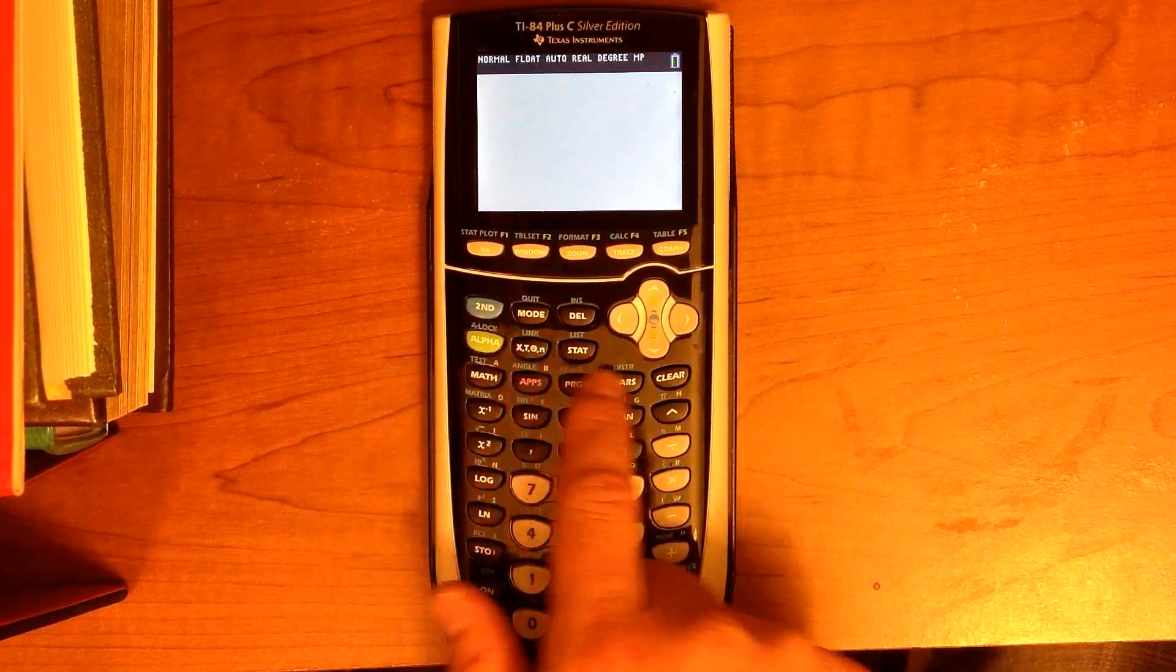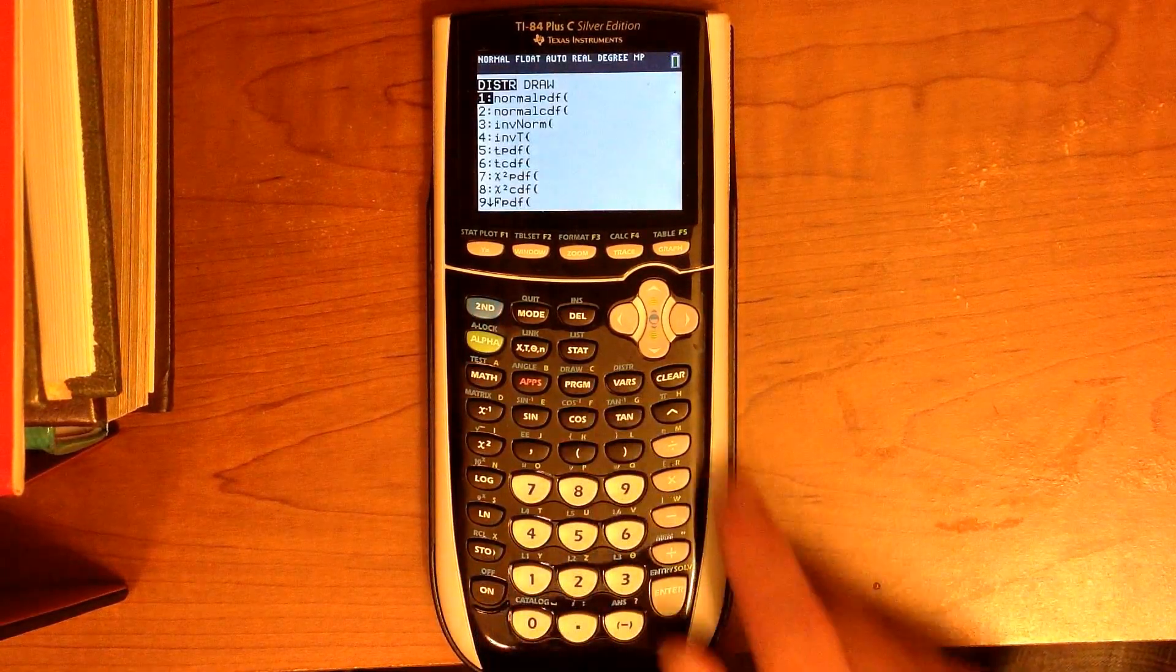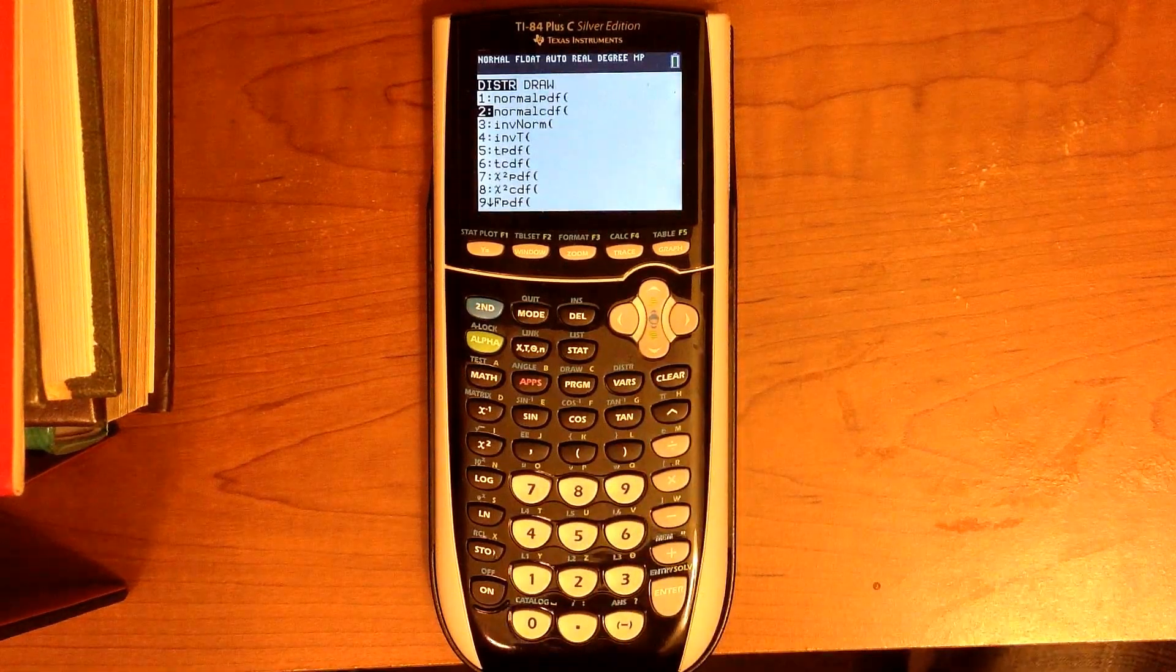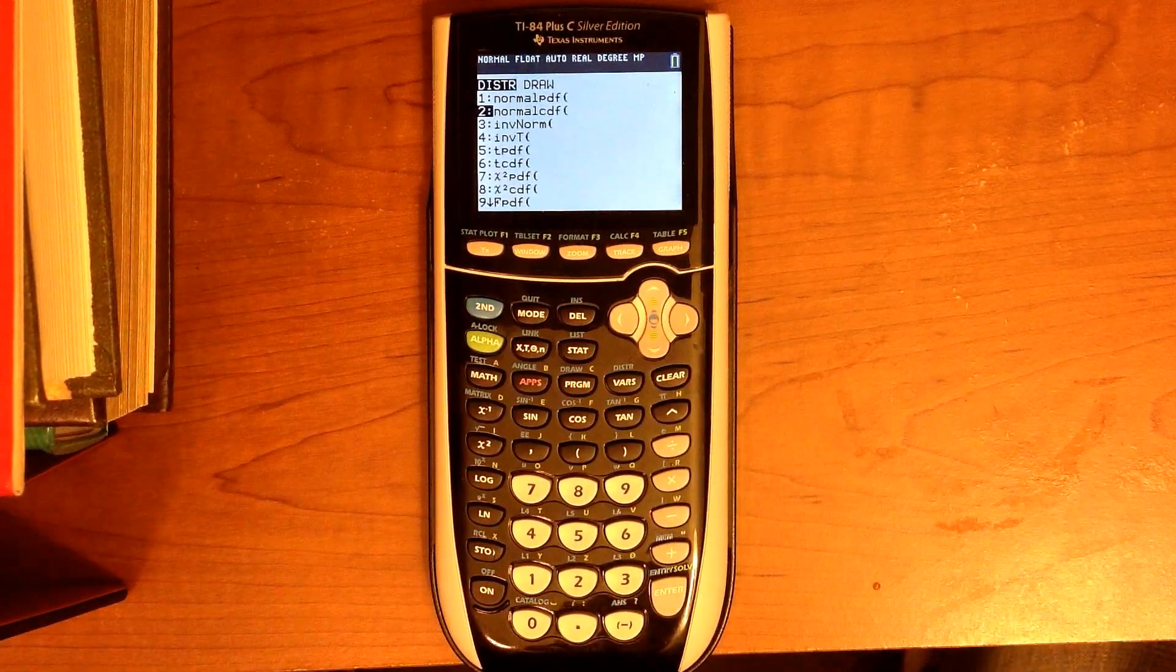You can find that under Second, Distributions, and select number 2, NormalCDF. Do not select PDF. Select CDF.